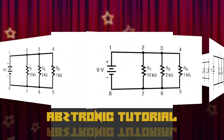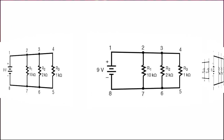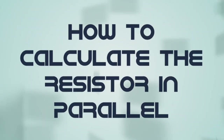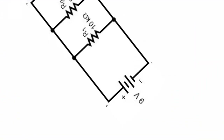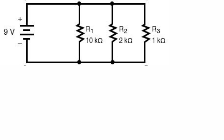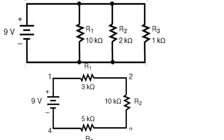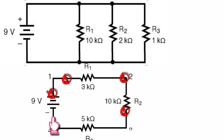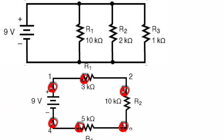Hello guys, welcome back to Abstronic tutorial. The topic is how to calculate the resistor connected in the parallel circuit. In the previous topic we covered three resistors connected in the series circuit. Let's review again how the current flows through the series circuit: in a series circuit, the current flowing through R1, R2, and R3 must be equal, simply because the current flows in one path.